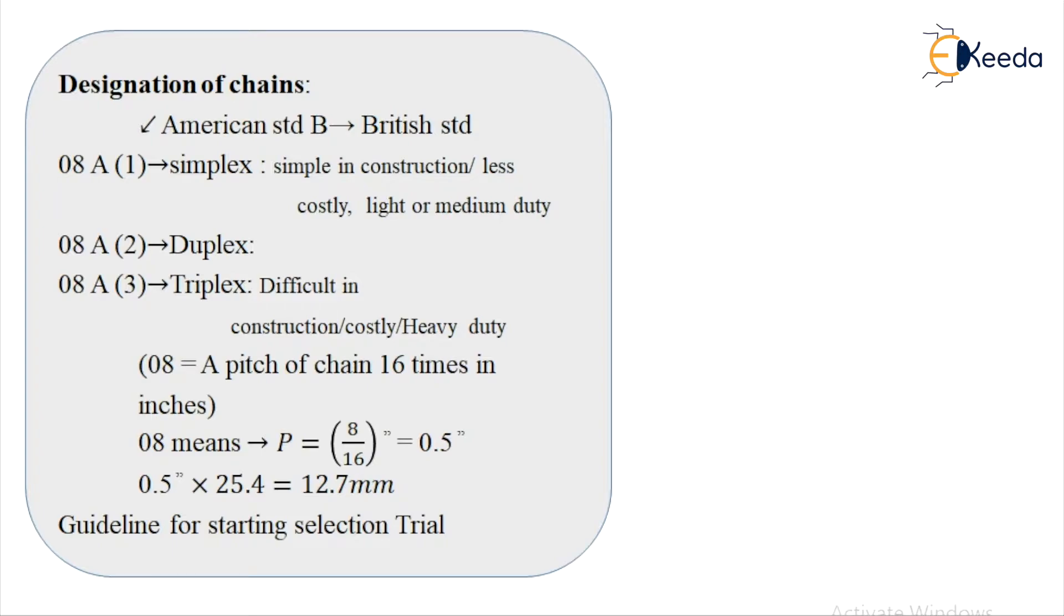The chain number is given in the first column. For example, 08B or 16A. This consists of two parts: a number followed by a letter. The number, in which two digits express the pitch in sixteenths of an inch. The letter A means American Standard ANSI series and letter B means British Standard Series. Most chain manufacturers are American and their ANSI series is popular in engineering industries.